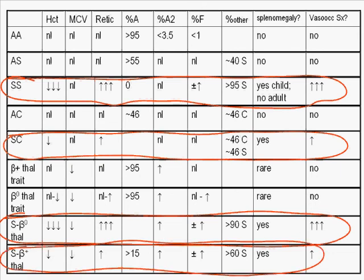Of these, SS and S beta zero thalassemia are the most severe, with the others being relatively mild. Sickle cell trait, AS, is not considered one of the sickle cell diseases.